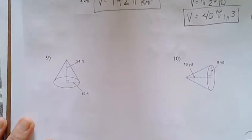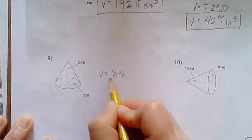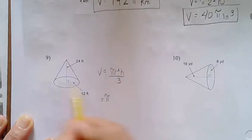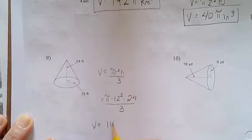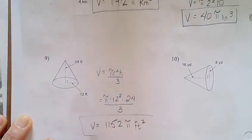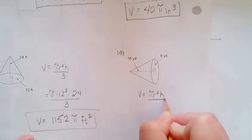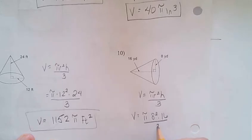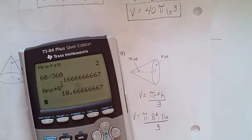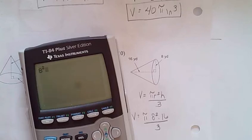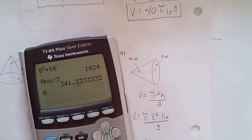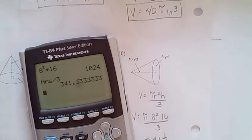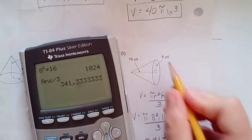Coming down here, the volume is going to equal pi r squared h divided by 3. So pi times my radius squared, 12 squared, times my height, 24, divided by 3. Let's see what that's going to be. 1152. Don't forget my pi feet squared. This one over here, pi r squared h comes to a point, so divided by 3, and volume is equal to pi, radius is 8 squared. My height is 16, divided by 3. So I'm going to do 8 squared, times 16, divided by 3. So that's 341.3, or one-third pi yards cubed.